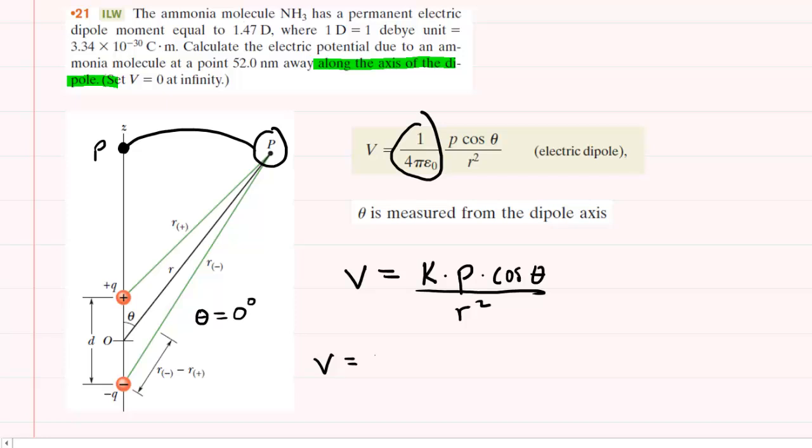So we're going to plug in the known values. We know that K is 8.99 times 10 to the power of 9, that's Newton meters squared per coulomb squared, multiplied by P, which is the electric dipole moment. That was given as 1.47 Debye's.